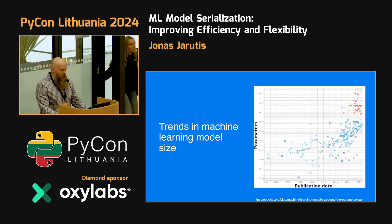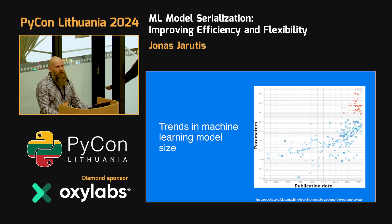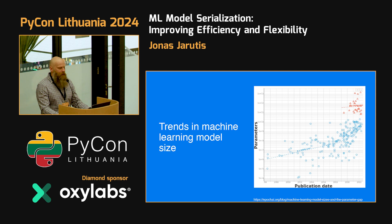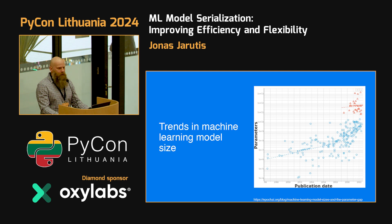We all know that the trend is that machine learning models aren't getting smaller — they are getting much bigger. So I believe that efficient representation and inference is important, and I will be focusing more on the smaller ones in this talk because, in my opinion, we will still run most of the world's machine learning applications.